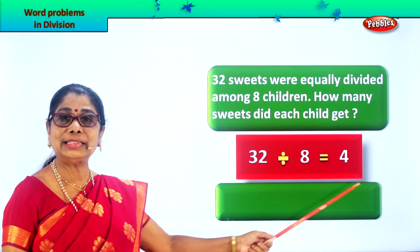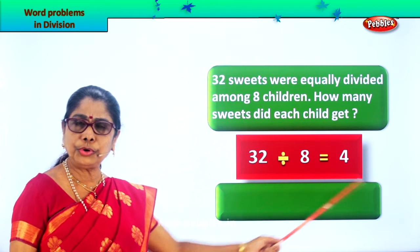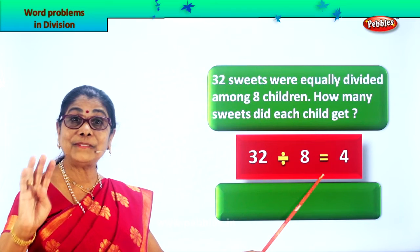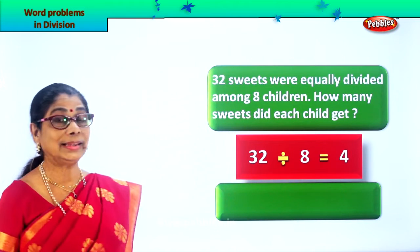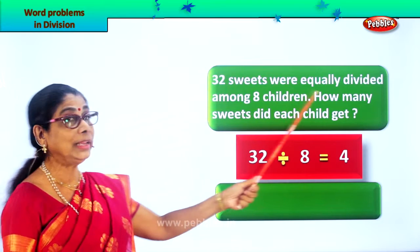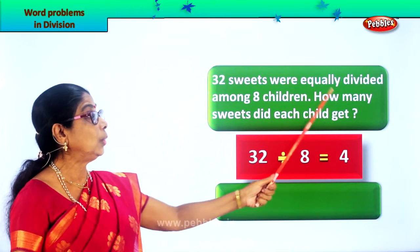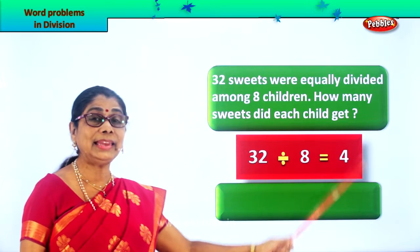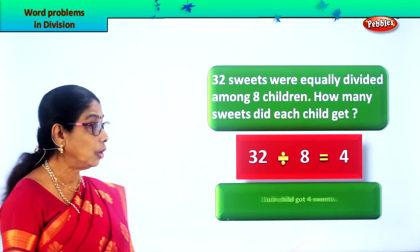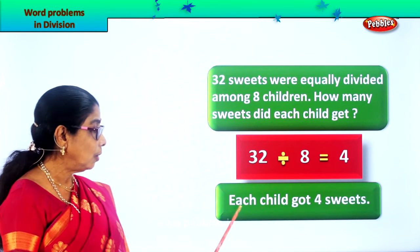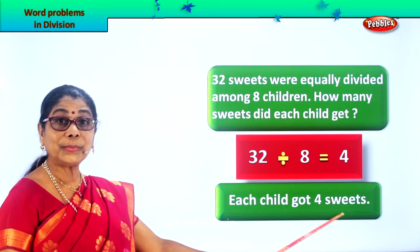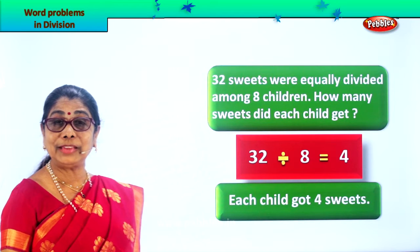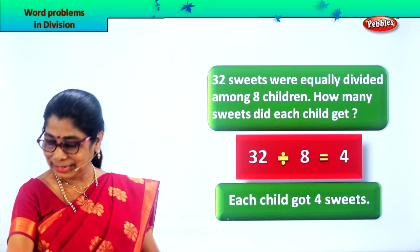32 divided by 8 is equal to 4. 4 into 8 is 32. So each child will get 4 sweets. Read again: 32 sweets were equally divided among 8 children — how many sweets did each child get? Each child got 4 sweets — everybody given equally. Good. Did you enjoy division?